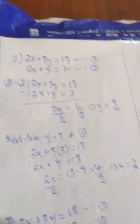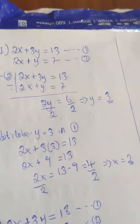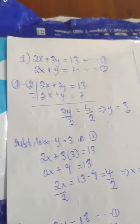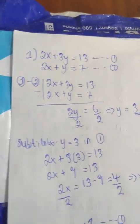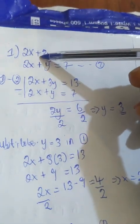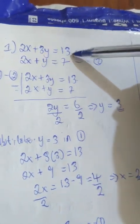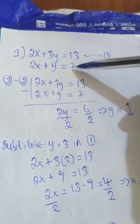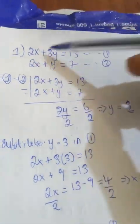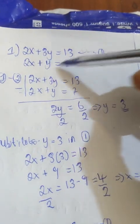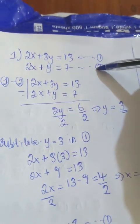Today I'll be taking you through some tutorials on how to solve simultaneous equations. The first equation here is 2x plus 3y equal to 13, and the second equation is 2x plus y equal to 7. This is equation one and this is equation two.